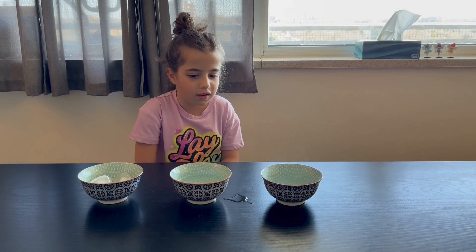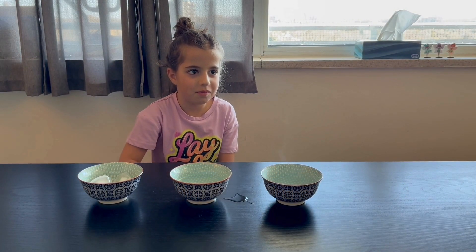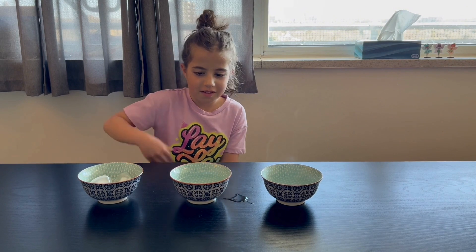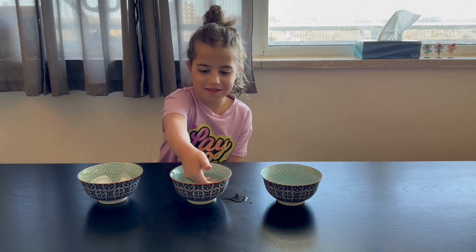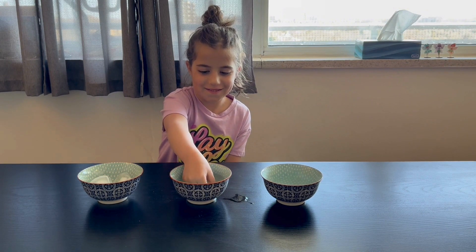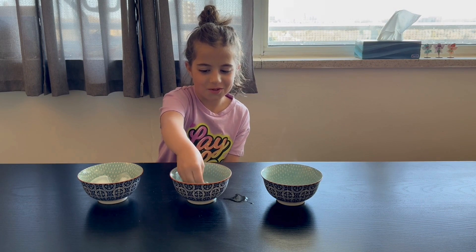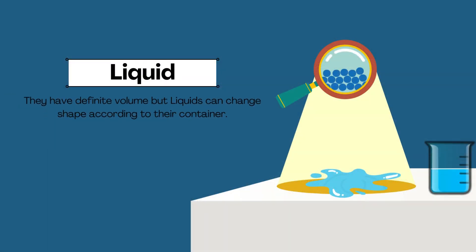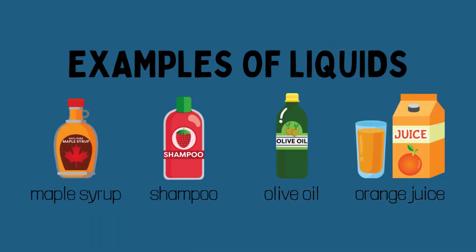How about liquids? Do they have a shape? No. Can you hold it in your hand? No, you cannot hold it. Liquids have definite volume, but liquids can change shape according to their container. Examples of liquids: syrup, shampoo, oil, and juice.